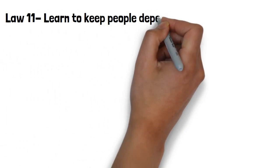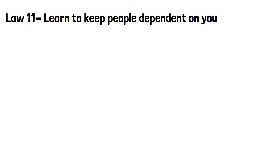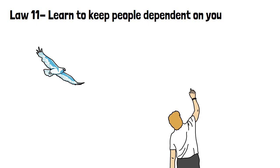Law 11, learn to keep people dependent on you. The more people rely on you, the more freedom you'll have, but be careful not to ever teach those around you with enough information that they start doing things for themselves. This is how you make people want you, without forcing or hurting them.